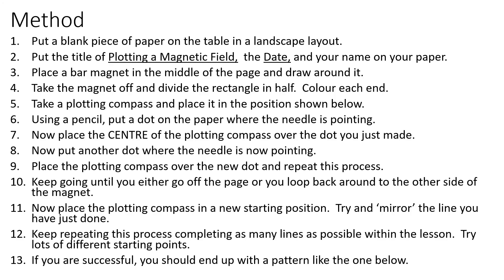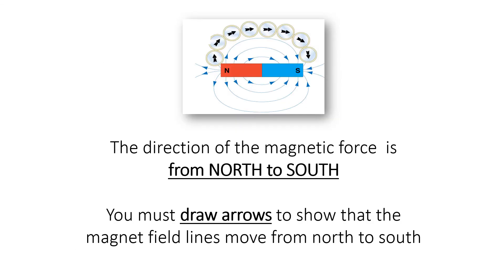Here are the main points to include in your method. You have to put the bar magnet down and draw a box around it so you know where the magnet is at all times. When using the plotting compass, place it in as many locations as possible and make a very fine pencil mark at the point of the needle. Repeat this lots of times to gather as much data as possible. Remember, magnetic force travels from north to south, so when drawing magnetic field lines, add arrows to every single line showing the field lines going from the north pole to the south pole of the magnet.